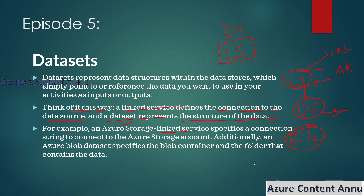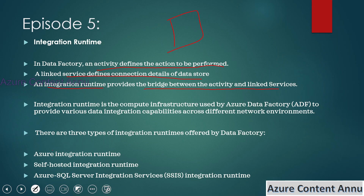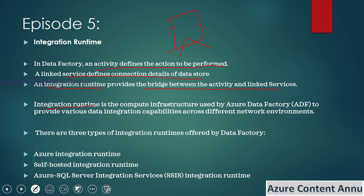Now moving on to integration runtime. In Data Factory, an activity defines the action to be performed, a linked service defines the connection details, and an integration runtime acts as the bridge between the activity and the linked service. Essentially, it is the compute infrastructure used by ADF to provide data integration capabilities across different network environments. There are three kinds: Azure integration runtime (also called auto-resolve), self-hosted integration runtime, and Azure SSIS integration runtime used to lift and shift SSIS packages.